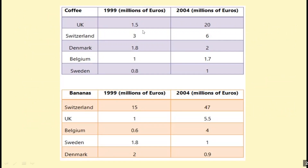So here's the table. You have the two products, coffee and bananas, over two years, 1999 and 2004, and the sales are measured in millions of euros. You have five countries: United Kingdom, Switzerland, Denmark, Belgium, and Sweden, and they are the same five countries when it comes to bananas. They are mostly arranged from the highest to the lowest.